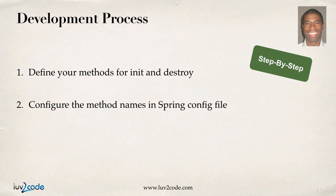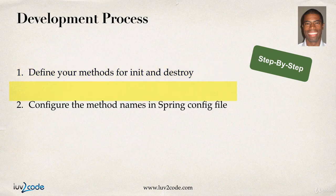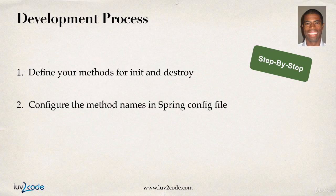So what's the basic development process? The first thing you do is simply define your methods for init and destroy in your bean class. Then the next step is you configure those method names in the Spring configuration file. In the next video, we'll dive into Eclipse and walk through this development process and test out this feature.